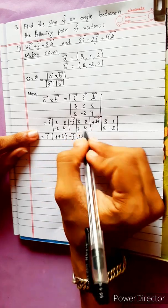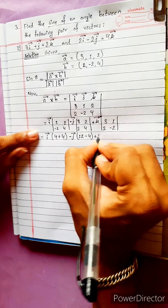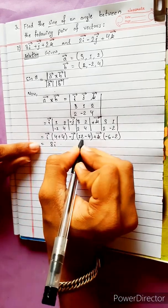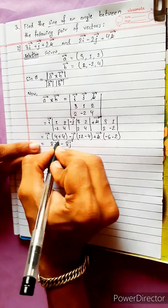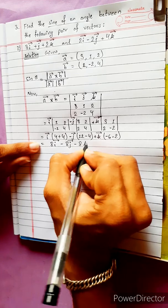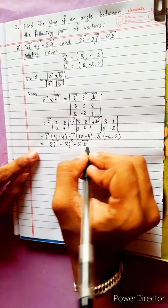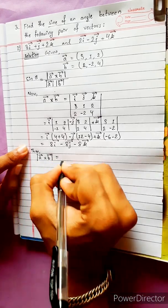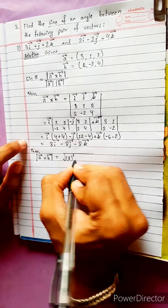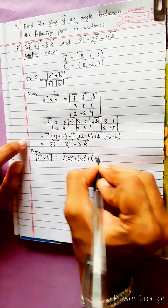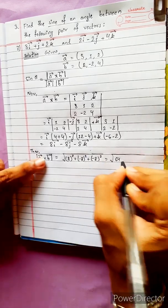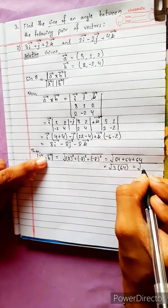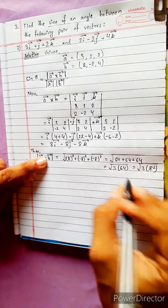This gives 8i minus 8j minus 8k. The magnitude of the cross product is the square root of 8 squared plus 8 squared plus 8 squared, which equals the square root of 64 plus 64 plus 64.